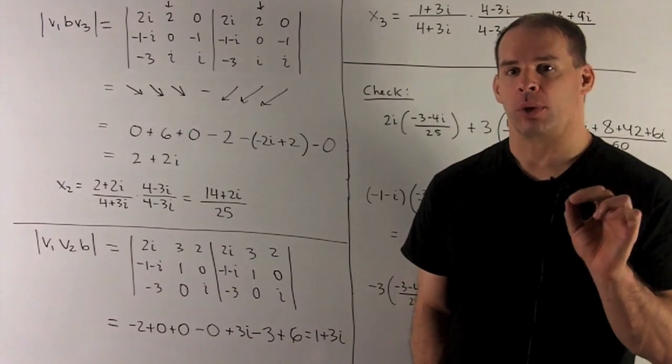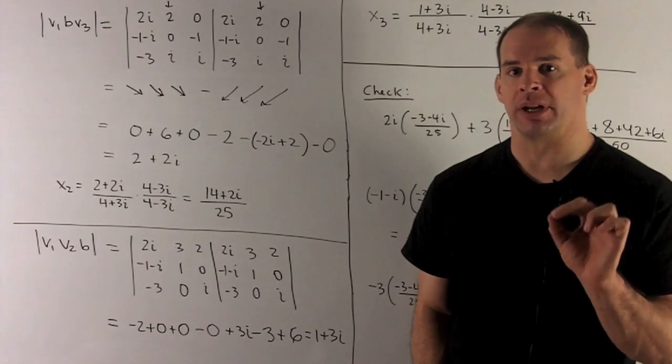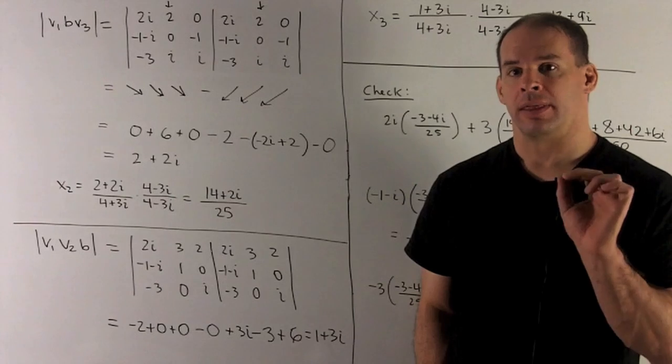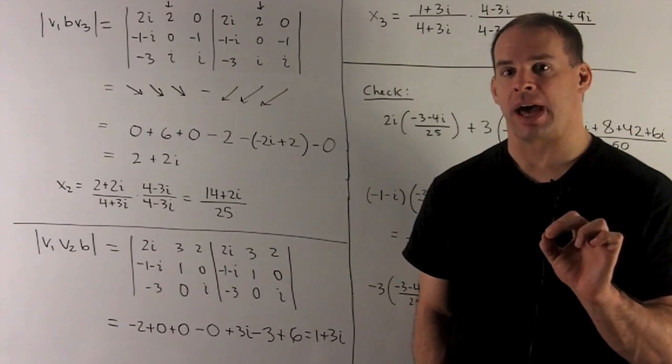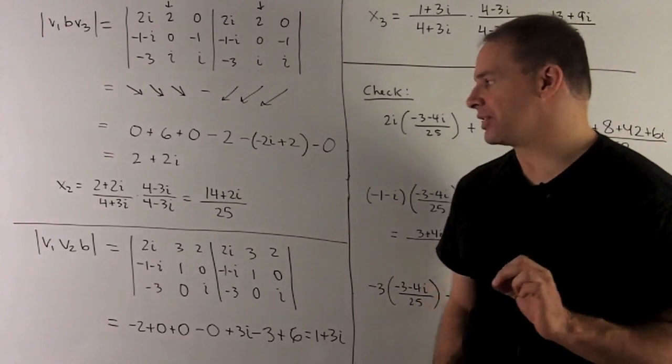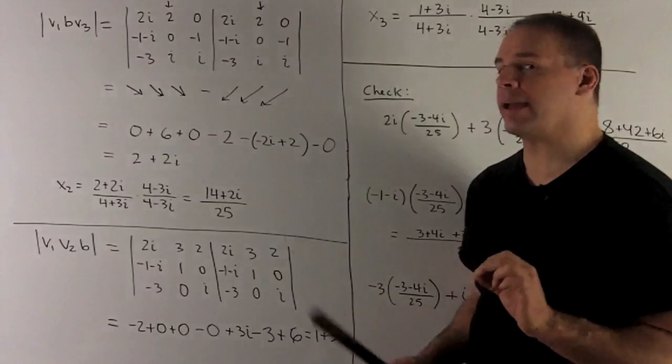We divide by 4 plus 3i, determinant of A itself. Then complex conjugate, top and bottom. That simplifies to 14 plus 2i over 25.